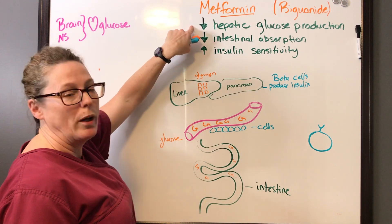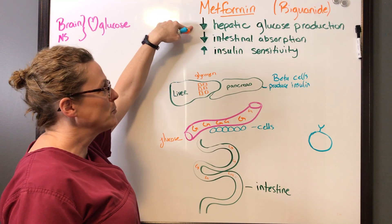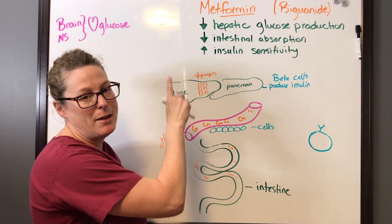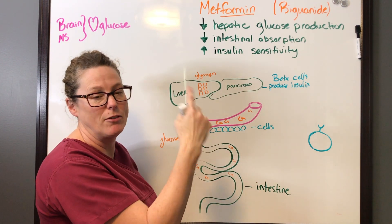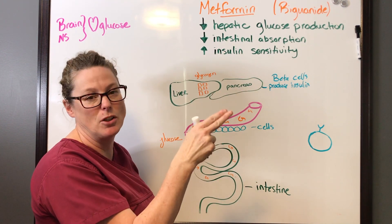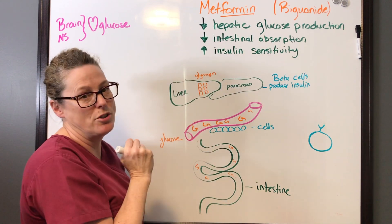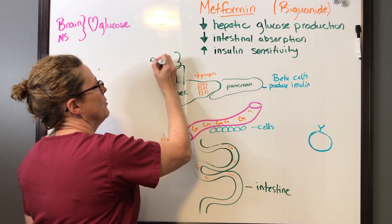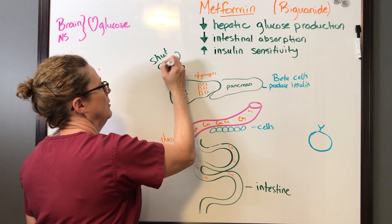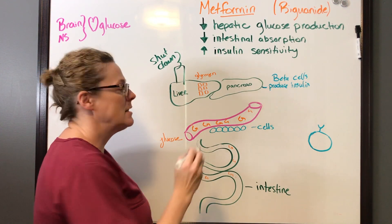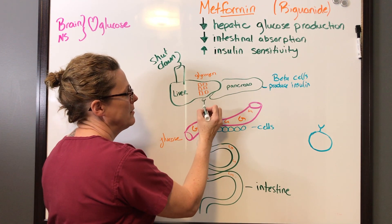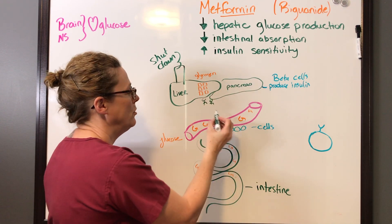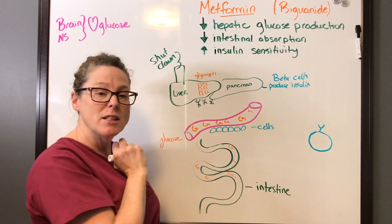Let's look at number one first — hepatic glucose production. That occurs in the liver, and because metformin — I use 'formin' — it reminds me of a factory. We've got somebody in charge who has orders today to decrease production. So the factory is going on a shutdown, and what that means is all the workers who are responsible for breaking down glycogen into glucose have to be reassigned today.